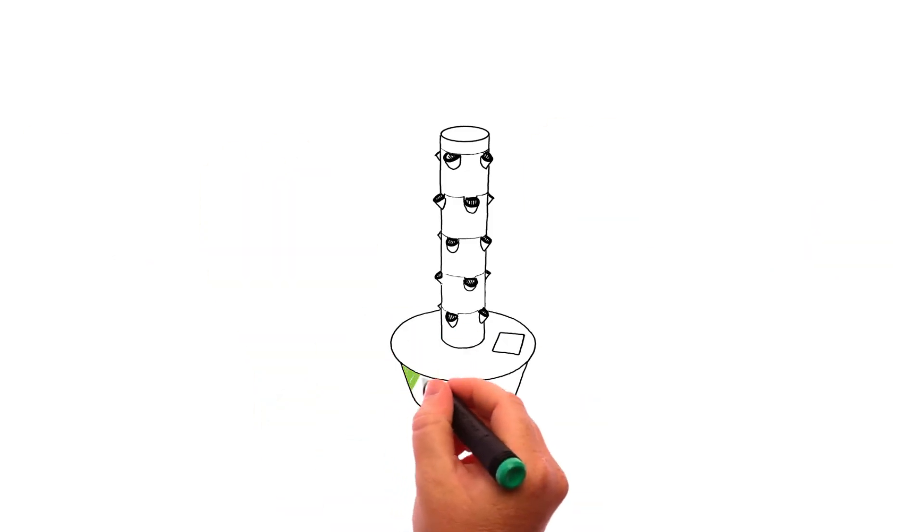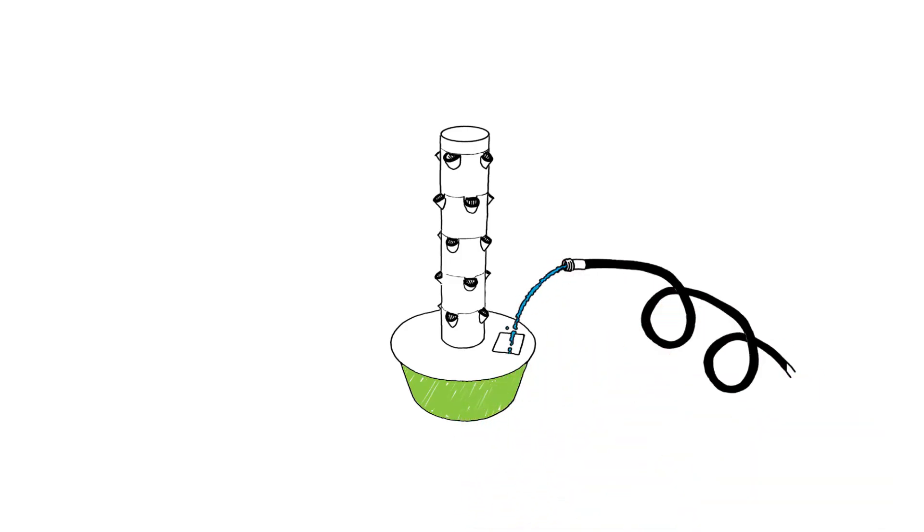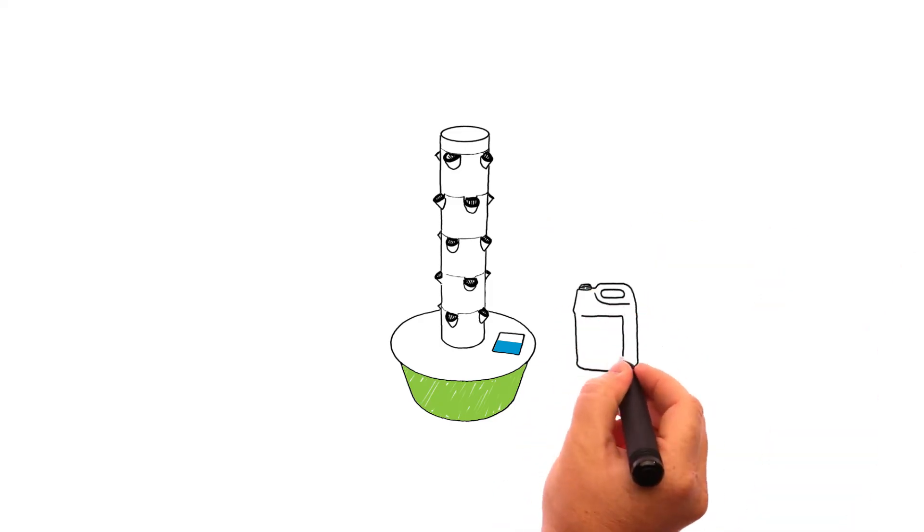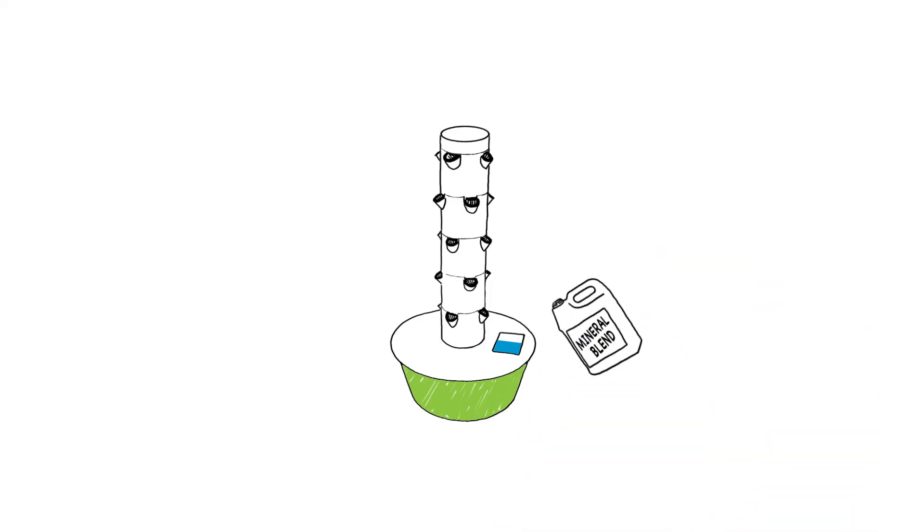Tower Garden has a 20-gallon reservoir at its base that stores the Tower Tonic nutrient solution. Developed by experts in plant and human nutrition, Tower Tonic mineral blend enables superior plant growth and better nutrition from your Tower Garden produce.